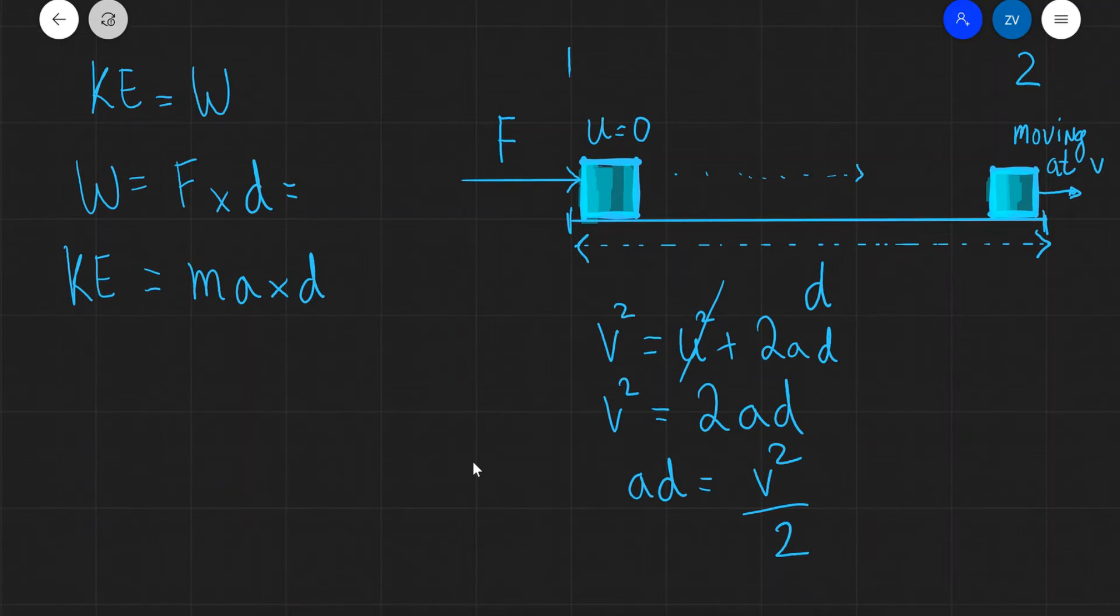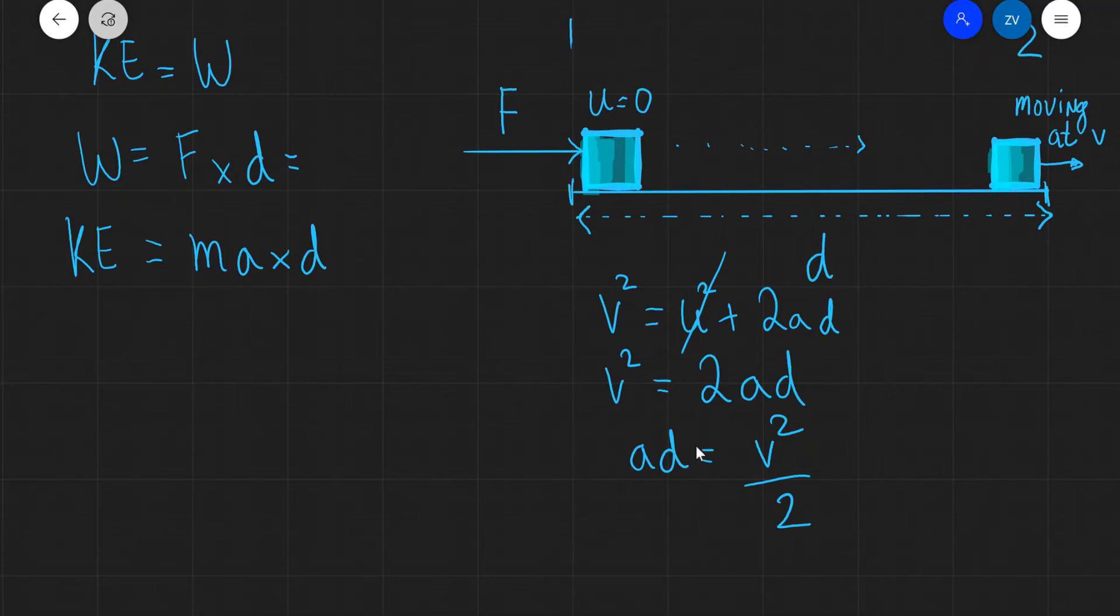So what I can do next is literally just substitute this expression for ad back into here. So what I will be left with is that the kinetic energy is equal to the mass, and rather than ad I'm going to write v squared divided by 2. And voila, this is the formula for kinetic energy that we've been learning since secondary school and we have now finally managed to derive it. How amazing is that?